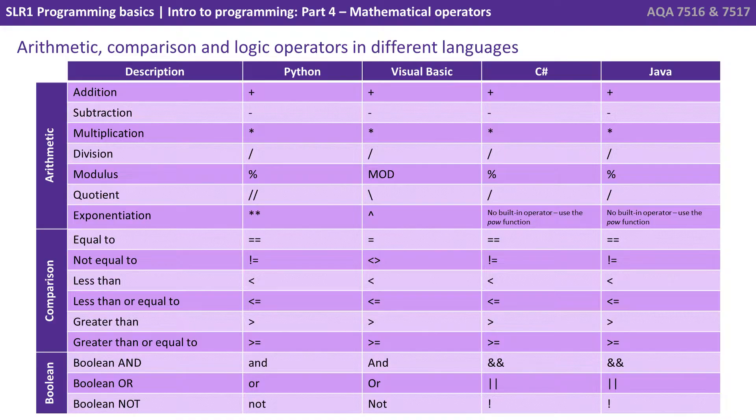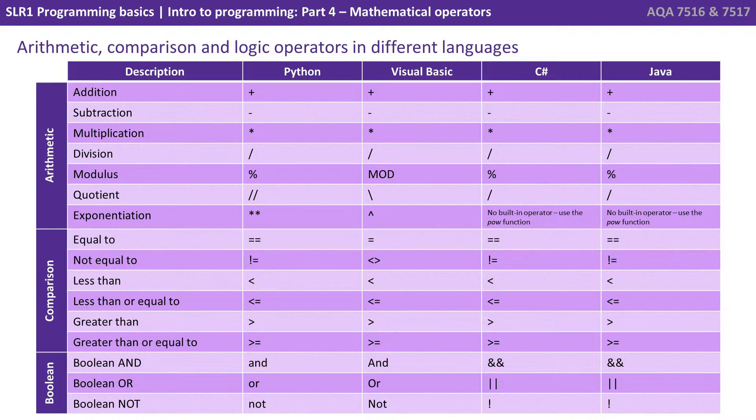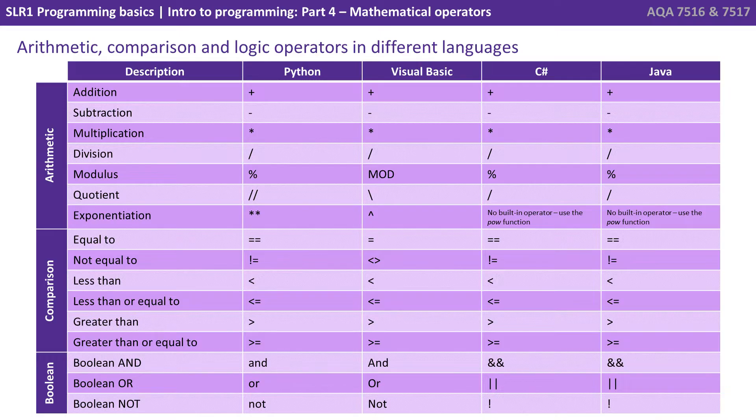Now again, as we've said in previous videos, there are different symbols used to represent the various arithmetic, comparison and boolean operators, depending on the language that you are learning. But the underlying concepts are the same and you need to be aware of everything shown in the left hand column in your exam.